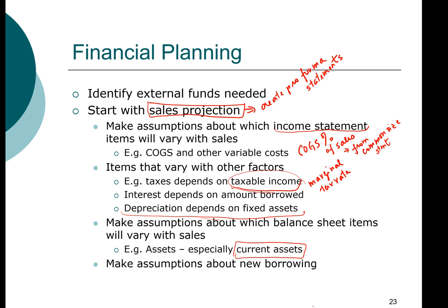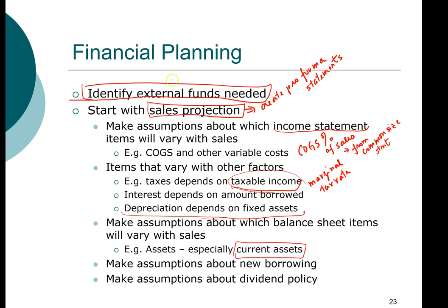Once a company decides how much money it needs to borrow, you look at the projected future net income and decide on your dividend policy — how much of the expected future net income to pay out as dividends. Once you have answered all these questions, you will know exactly how much external funds — meaning new equity — you will need. We start with the sales projection, analyze each cost item, and analyze what kind of assets will be needed to support that level of sales.